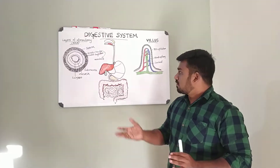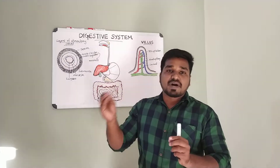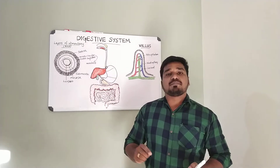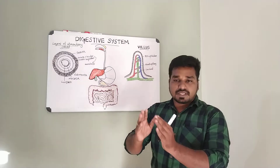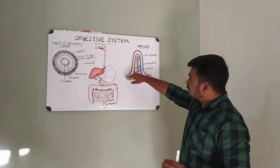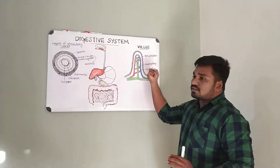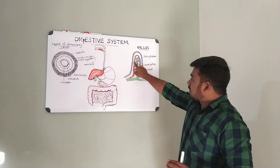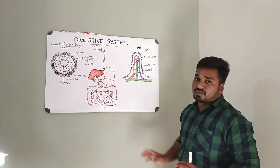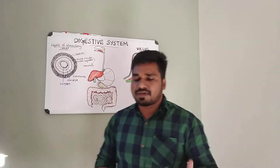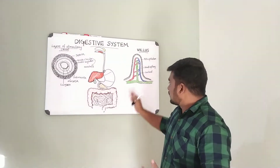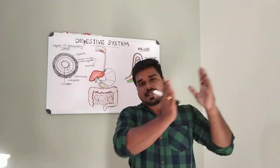Fat digestion involves bile from the liver emulsifying fat, after which pancreatic lipase breaks it into fatty acids and glycerol. The products of fat digestion give the lacteals a milky appearance, and these are ultimately transported via the lymphatic system into the blood.